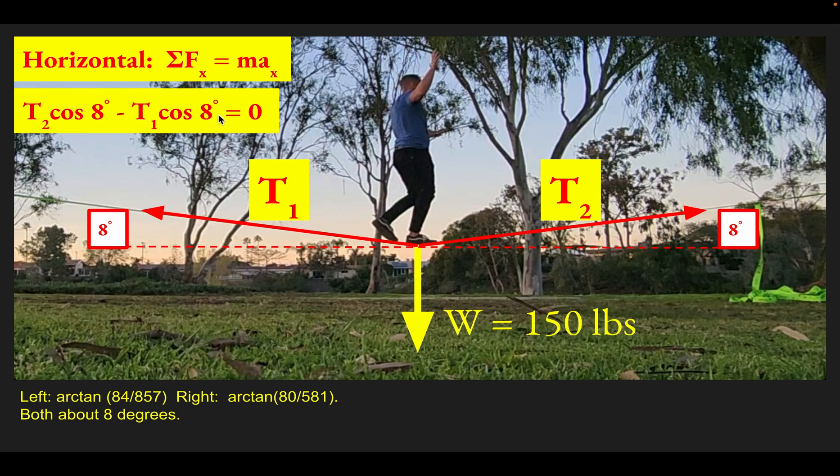These two horizontal forces would conspire to make zero, since the central point of the line is not accelerating to the right or left. Since T2 cos 8 minus T1 cos 8 equals zero, T1 is just going to have to be equal to T2 in this case.